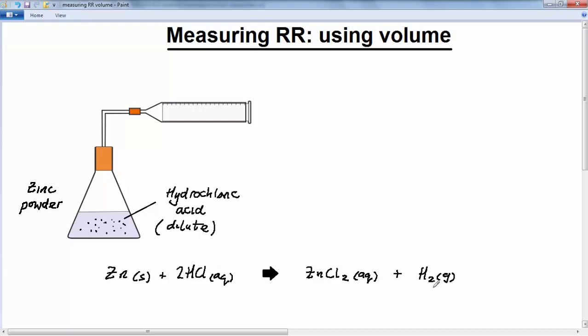So what we're doing in this reaction is we're measuring the rate at which hydrogen gas is released into this gas syringe. So we've got a gas syringe.